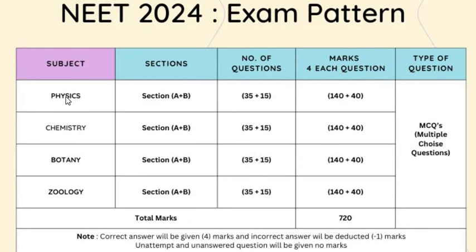There are 4 subjects: Physics, Chemistry, Botany, and Zoology. The Biology unit will be 50%, so the maximum marks you find is 180. 180 into 4 is 720, so 720 is the maximum marks.